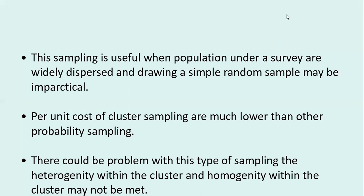Sampling design is very important. Sampling design is done in two ways: probability and non-probability sampling. In probability sampling, simple random sampling is unrestricted sampling. Restricted sampling is further divided into systematic sampling, stratified random sampling, and cluster sampling. That's all for today — thank you very much.